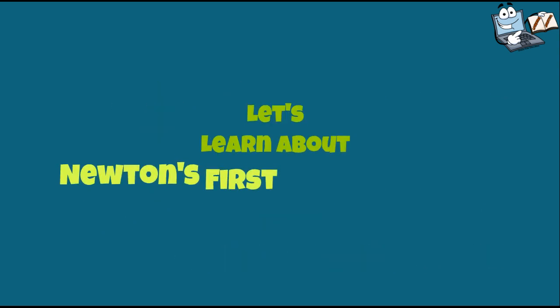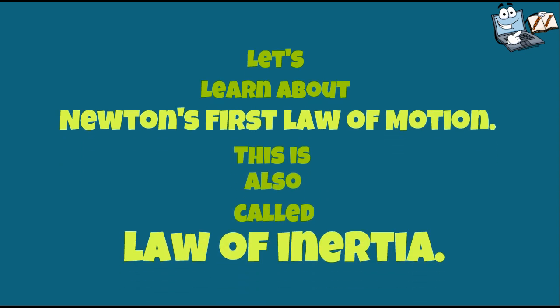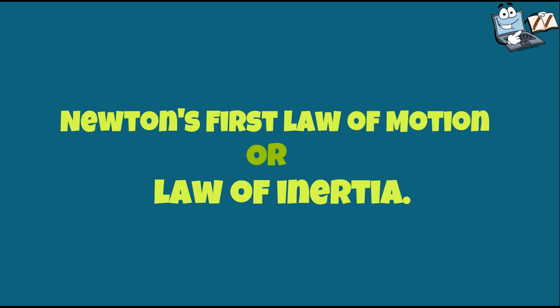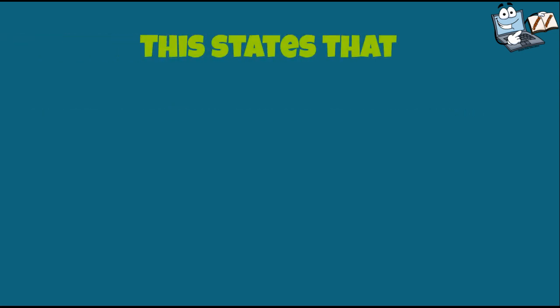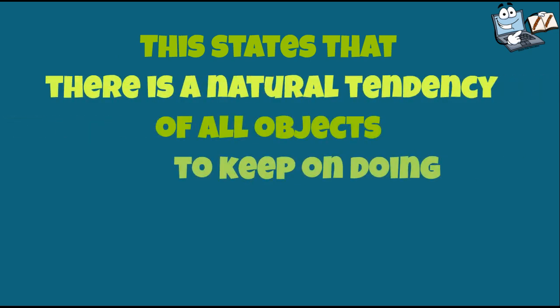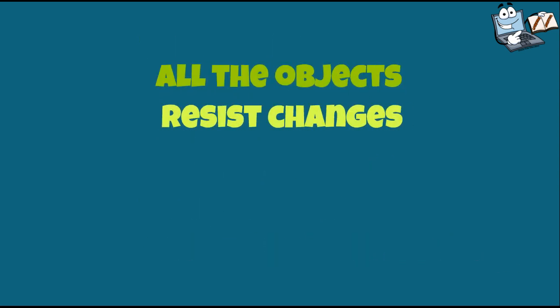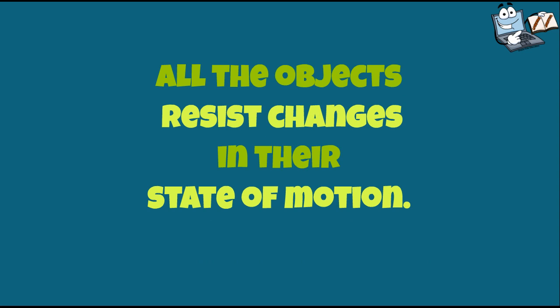Let's learn about Newton's first law of motion. This is also called the law of inertia. Newton's first law of motion, or law of inertia, states that there is a natural tendency of all objects to keep on doing whatever they are doing. All objects resist changes in their state of motion.